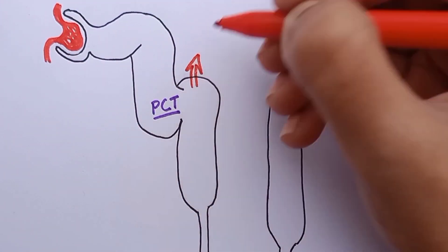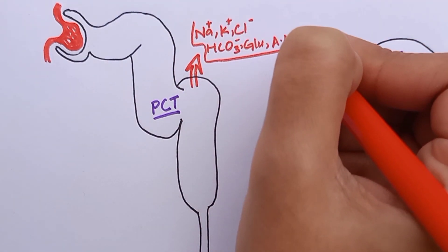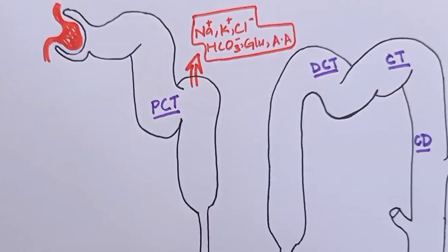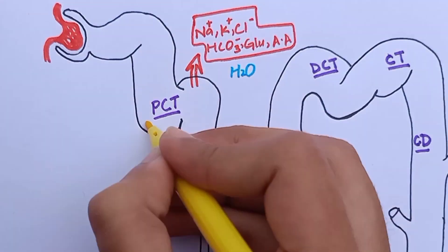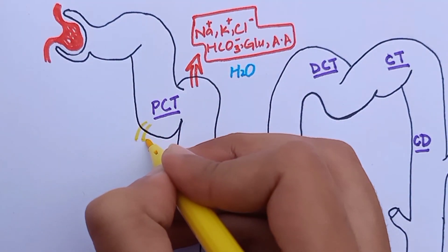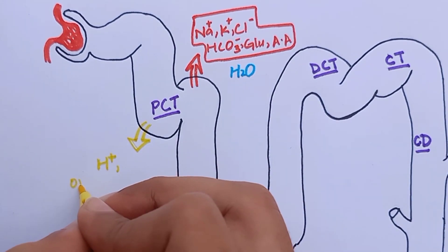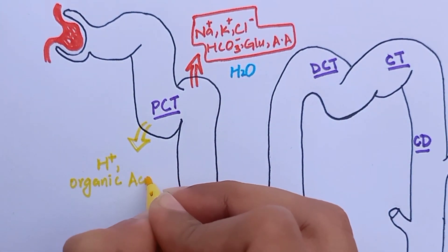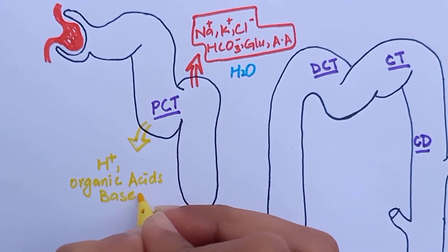In the proximal convoluted tubule, there is reabsorption of sodium, potassium, chloride, bicarbonate ion, glucose, and amino acids. 65% of all the water that has entered the tubule is reabsorbed in the proximal tubule. There is also secretion of hydrogen ion and organic acids and bases — for example, bile salts, oxalate, urate, and catecholamines.